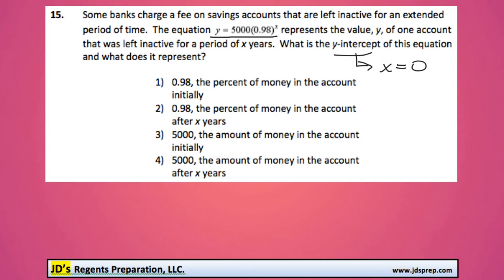What we need to do is look at our equation and replace x with 0. So 5,000 times 0.98 to the power of x, except we're going to replace x with 0. This is equal to 5,000 times 1 because anything to the power of 0 is equal to 1. We get a y-value of 5,000.